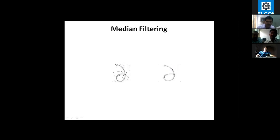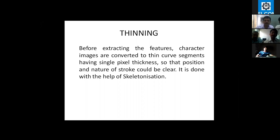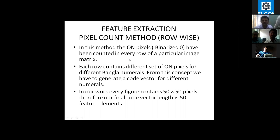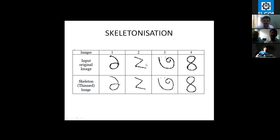Then we go to thinning. Thinning is needed because the thickness of handwritten samples varies from writer to writer. In order to apply efficient methods, samples should be of uniform or ideally single-pixel thickness so that the stroke direction can be noted. We use skeletonization to reduce images to single-pixel width. The upper images show the original binarized samples and below are the thinned results — it is quite obvious that thickness is reduced, making it easy to extract features.